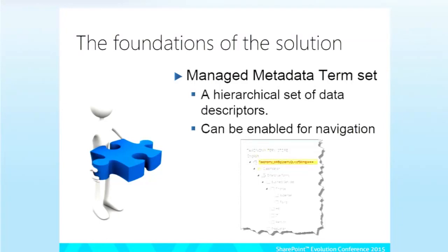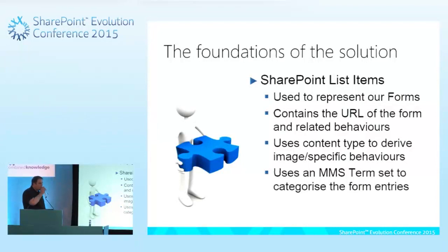We're going to use a managed metadata term set. We've got three key business areas — business services, production, and warehousing — with sub-terms like finance, expenses, and payroll. Managed metadata is basically a hierarchical data descriptor: you can have parents and children. The beauty is when doing search or list refinement, you can click on a parent and it will select all the children — unlike the old choice fields where picking the parent didn't give you the children. The key thing is we can now use this for navigation: in the enterprise forms site we wire in our left-hand navigation to the classification, so when you pick business services, you get all forms related to it.